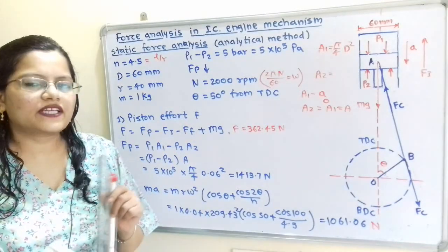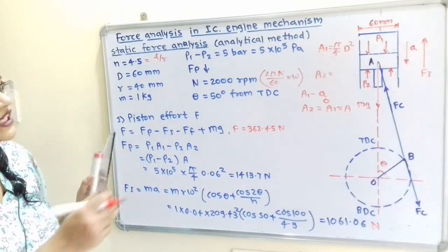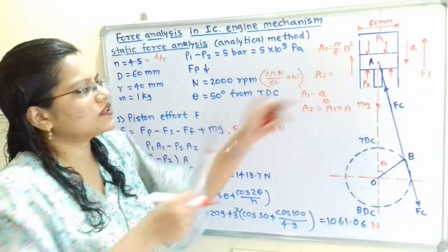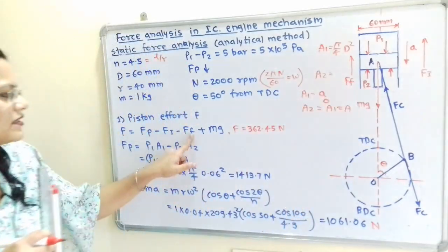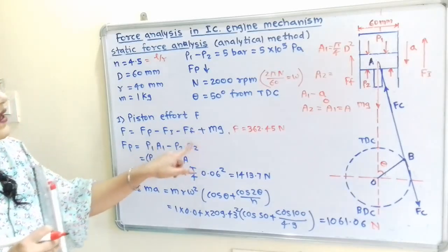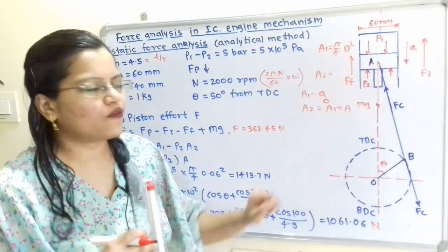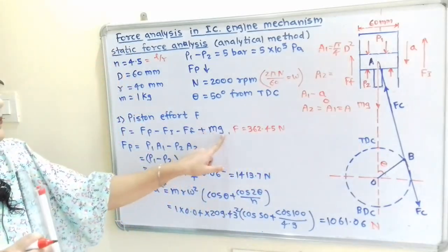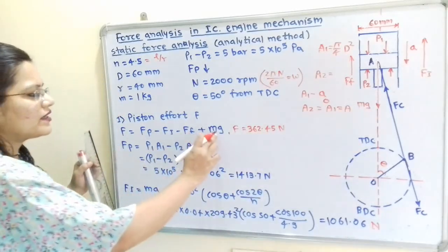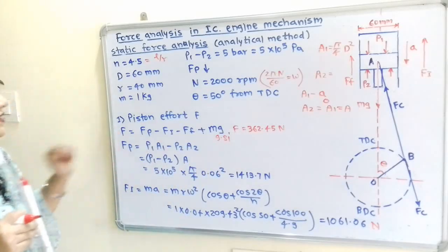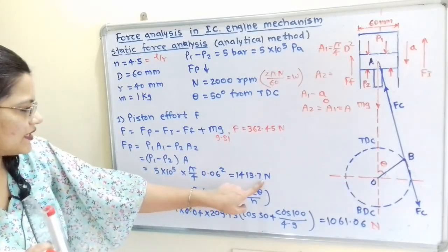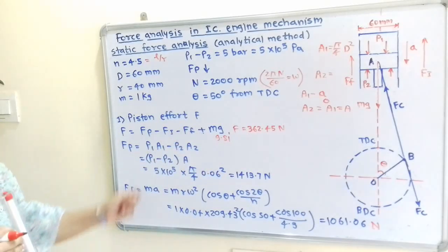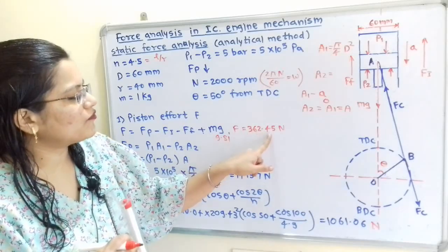Friction force is not mentioned in the question, so Ff = 0. Weight Mg = 1 × 9.81 = 9.81 N acts downward, so it gets a positive sign. Therefore, piston effort F = 1413.7 − 1061.06 − 0 + 9.81 = 362.45 N.